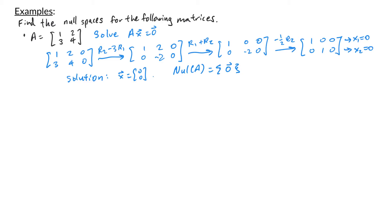A useful remark: when row reducing to find the null space, the augmented part of the matrix is always zero and never changes under row operations. So in the future you don't really need to write the augmented part — just remember at the end to set each row equation equal to zero.